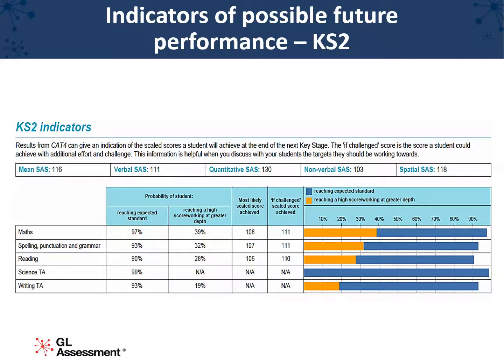This is the primary individual report from CAT4 showing links to the new Key Stage 2 scaled scores. Firstly, it shows the probability of the student reaching a score that is the expected standard or the higher standard set by the government. Next, you can see the Key Stage 2 score they're likely to achieve, or the one that students with the same CAT4 score have previously achieved on average, together with the score that the upper 25% of pupils with the same CAT4 score go on to get.